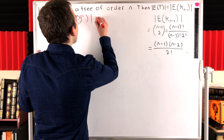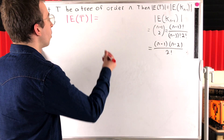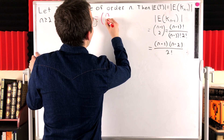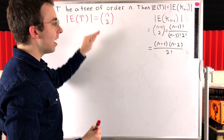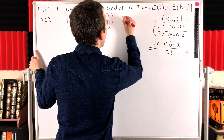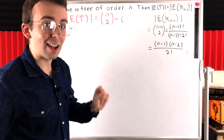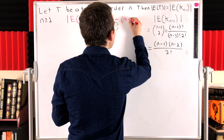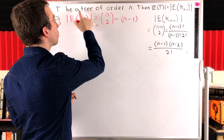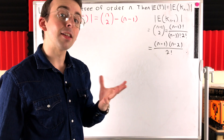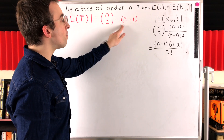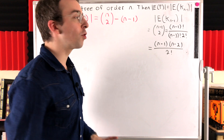So how many edges will the complement of a tree graph have? By definition of the complement of a graph, it's going to have every possible edge except for the edges that the original graph T had. With n vertices, every possible edge count is n choose two. The original graph T had n minus one edges because it was a tree on n vertices. Thus, by definition of graph complement, the complement is going to have n choose two minus n minus one edges.